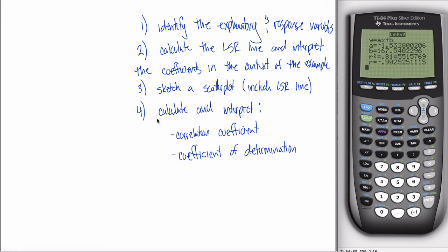Fourth: calculate and interpret both the correlation coefficient and the coefficient of determination. The correlation coefficient is always r, and the coefficient of determination is always r-squared — don't expect me to tell you that; make sure you understand which is which. Both come straight out of the same LinReg ax plus b screen. In addition to calculating them, you have to be able to interpret them: r would tell me I have strong negative correlation, and r-squared tells me that 81% of the variance in sales is attributable to temperature.